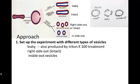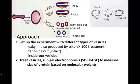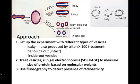In terms of your overall approach, you start out with these different vesicles. It could be intact, it could be leaky, or inside out. So you set up these different types of vesicles. Then you treat the vesicles. Run the gel electrophoresis to measure the size of the protein based on molecular weight.